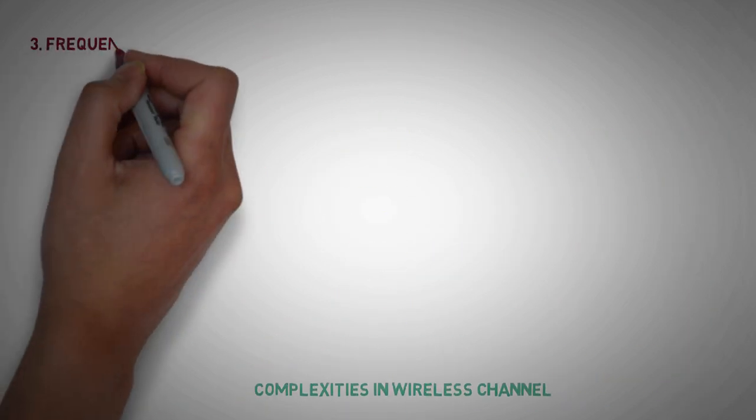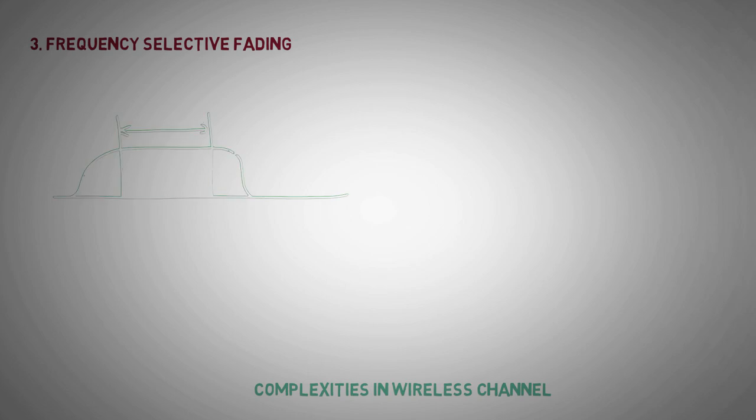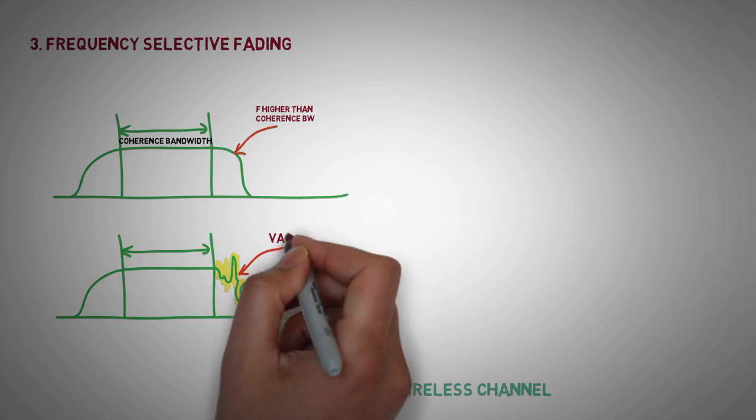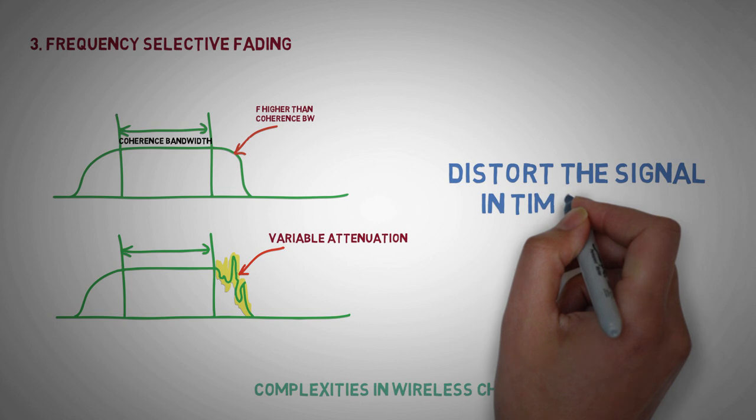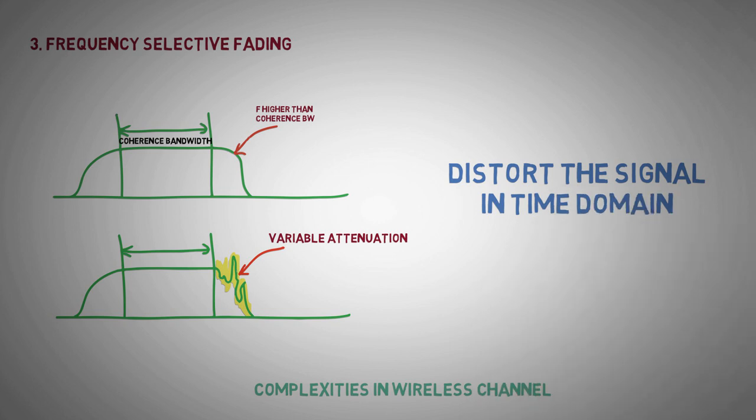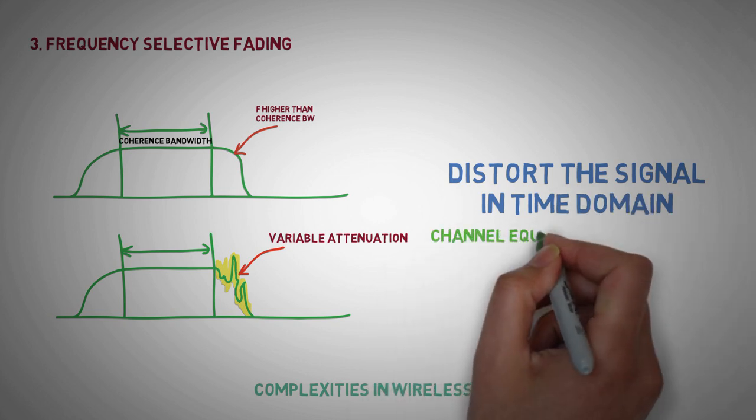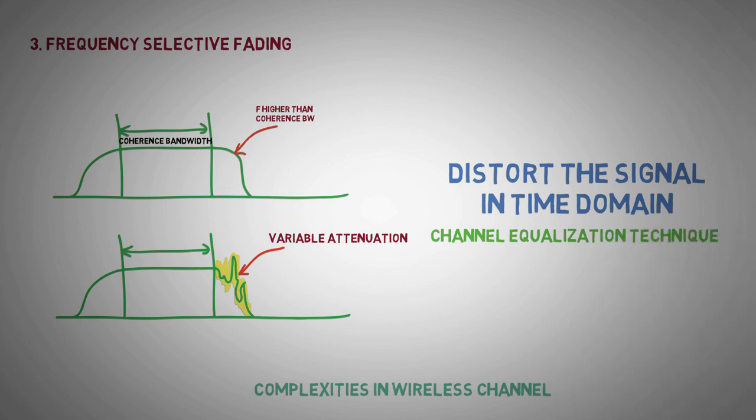Frequency selective fading. Signals having bandwidth higher than the coherence bandwidth of the channel faces variable attenuation at different frequencies. This ultimately distorts the signal and gives rise to frequency selective fading. Complex channel equalization techniques are employed to reduce it.